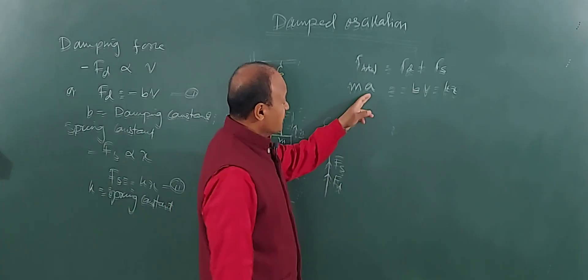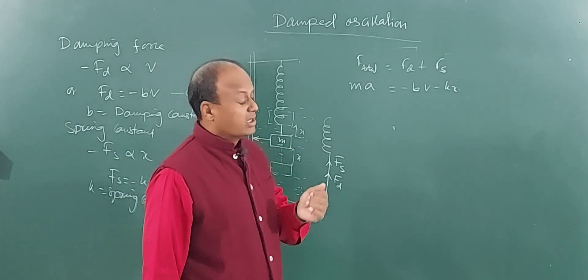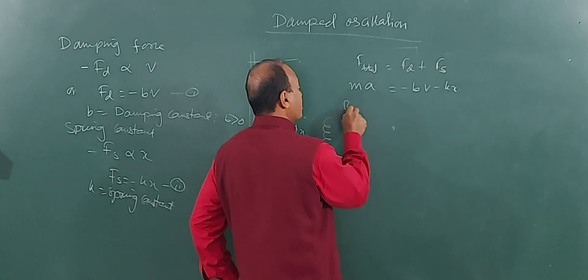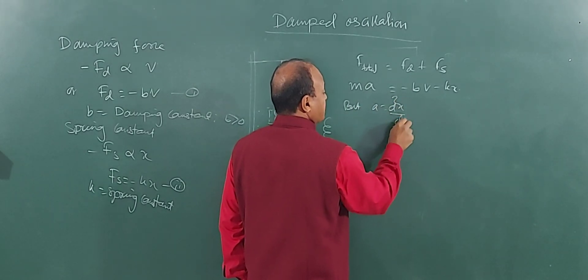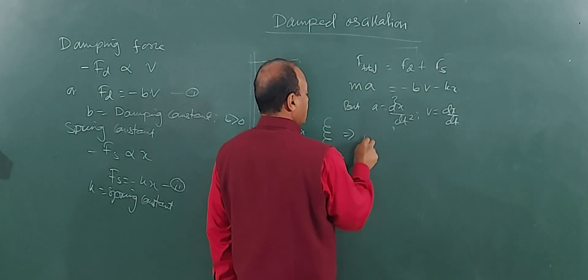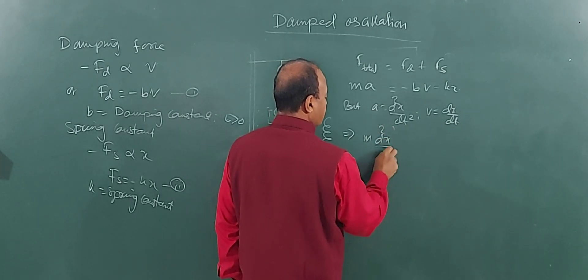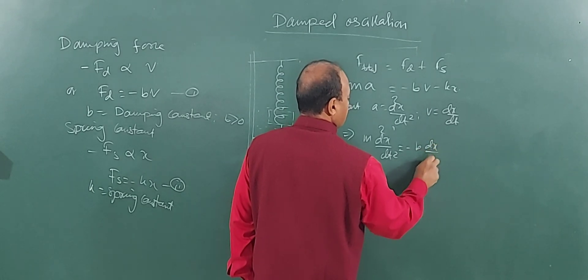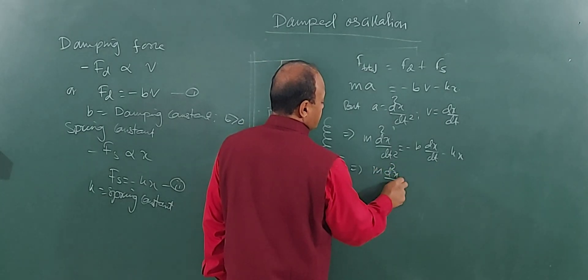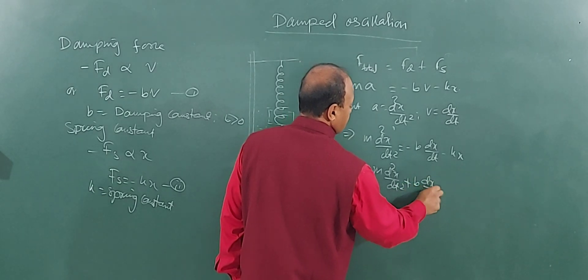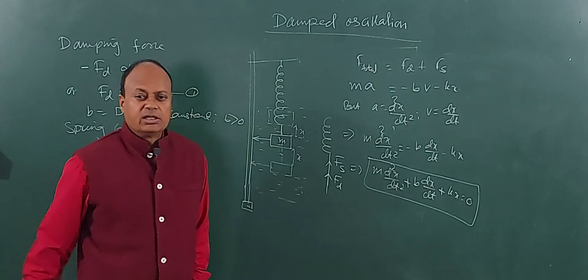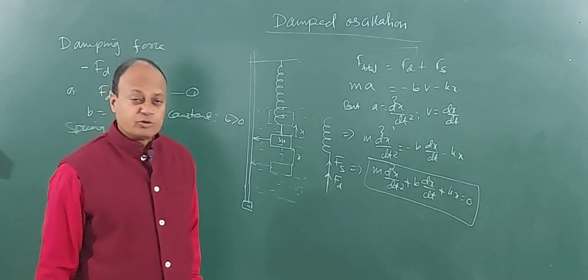We know that acceleration a equals the second derivative of displacement, and v equals dx/dt. Putting these values: m times d²x/dt² equals minus b times dx/dt minus kx. Bringing the terms to the left-hand side: m d²x/dt² plus b dx/dt plus kx equals zero. This equation is the equation of damped oscillations — you have to remember this.